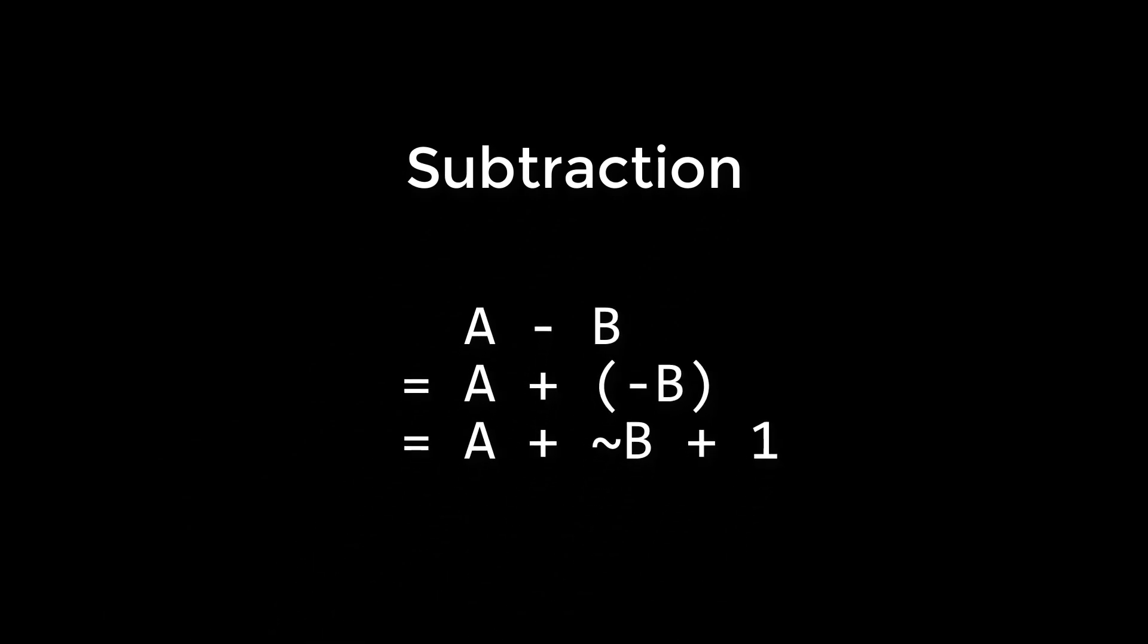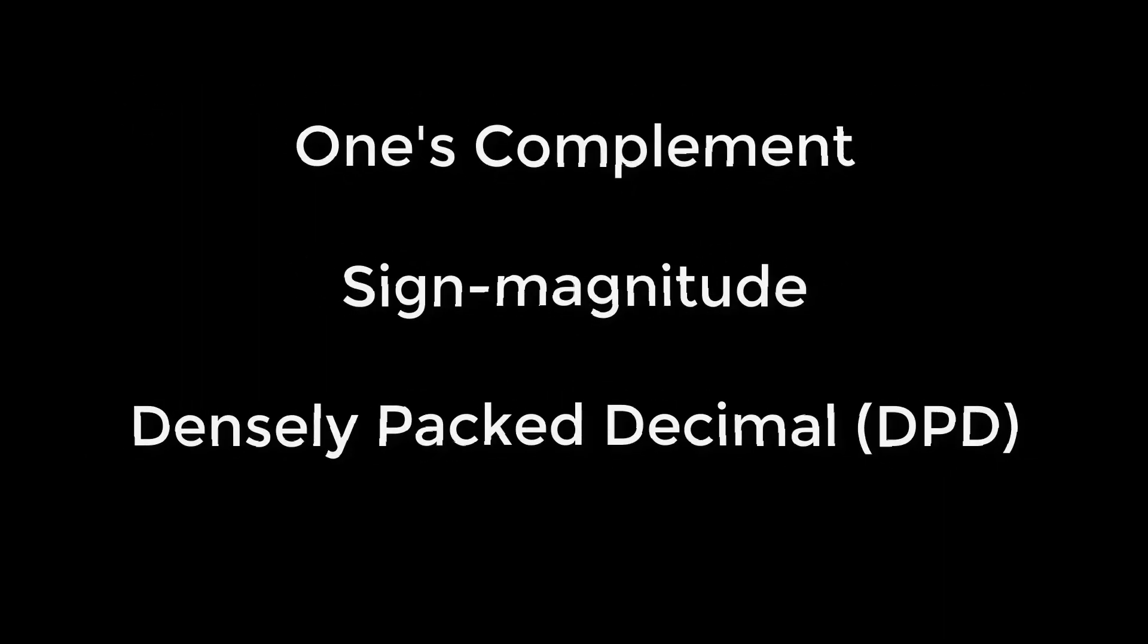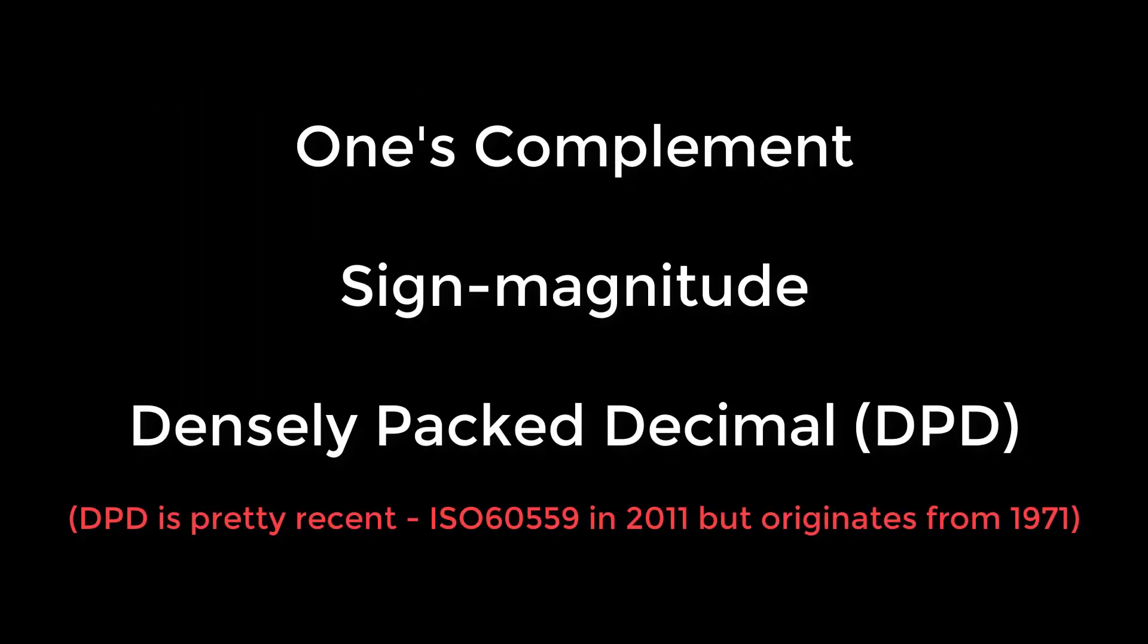If we want to subtract, for example, a minus b, we would make b negative and then add. In effect, a plus negative b, or a plus the inversion of b plus 1. So we only need to know how to add to also be able to do subtraction. This way of representing negative numbers is called two's complement. The fact that addition and subtraction are so easily implemented is why it is popular in modern computer systems. Other ways of representing numbers exist, such as one's complement, sign magnitude, and densely packed decimal.